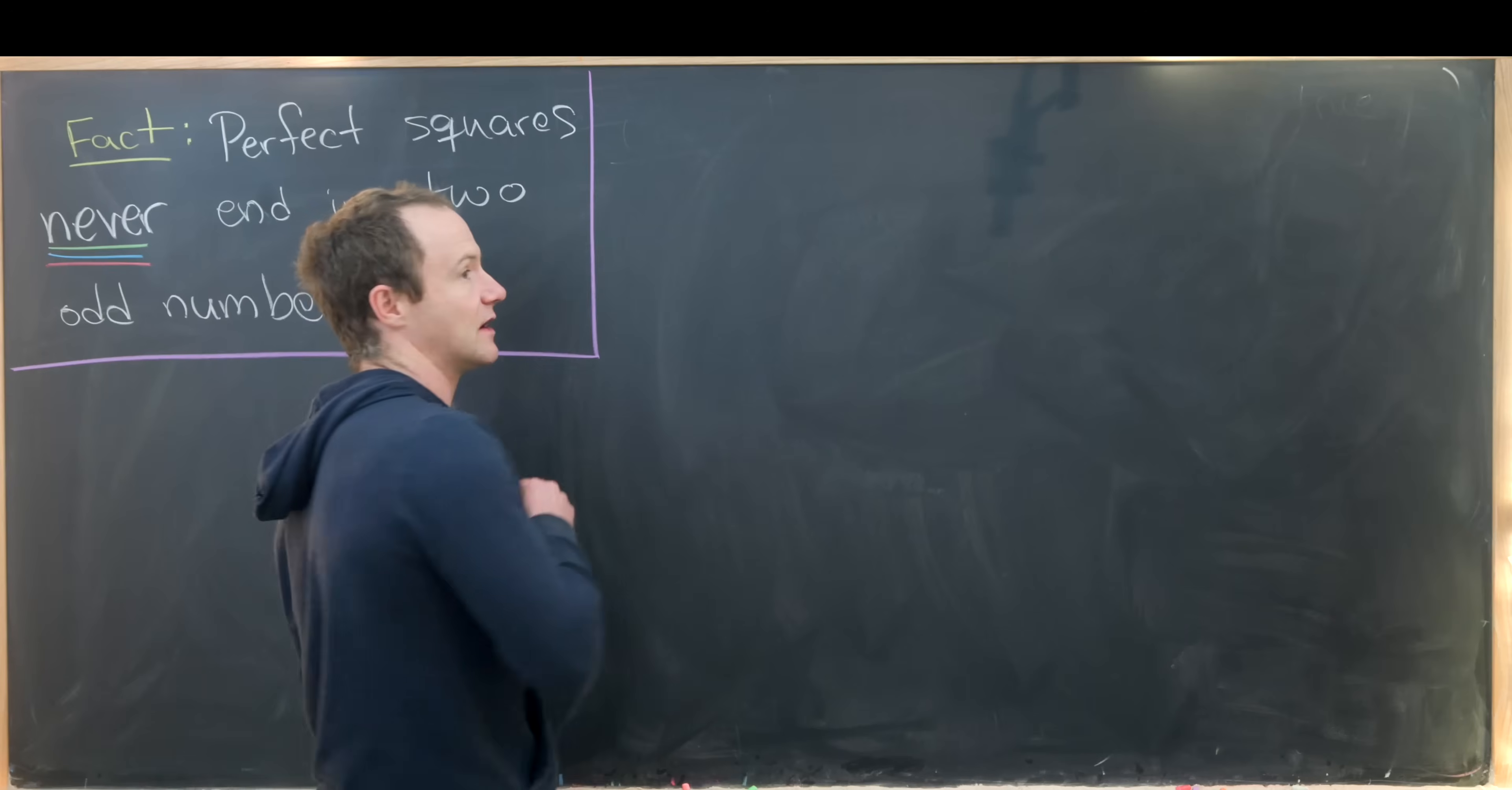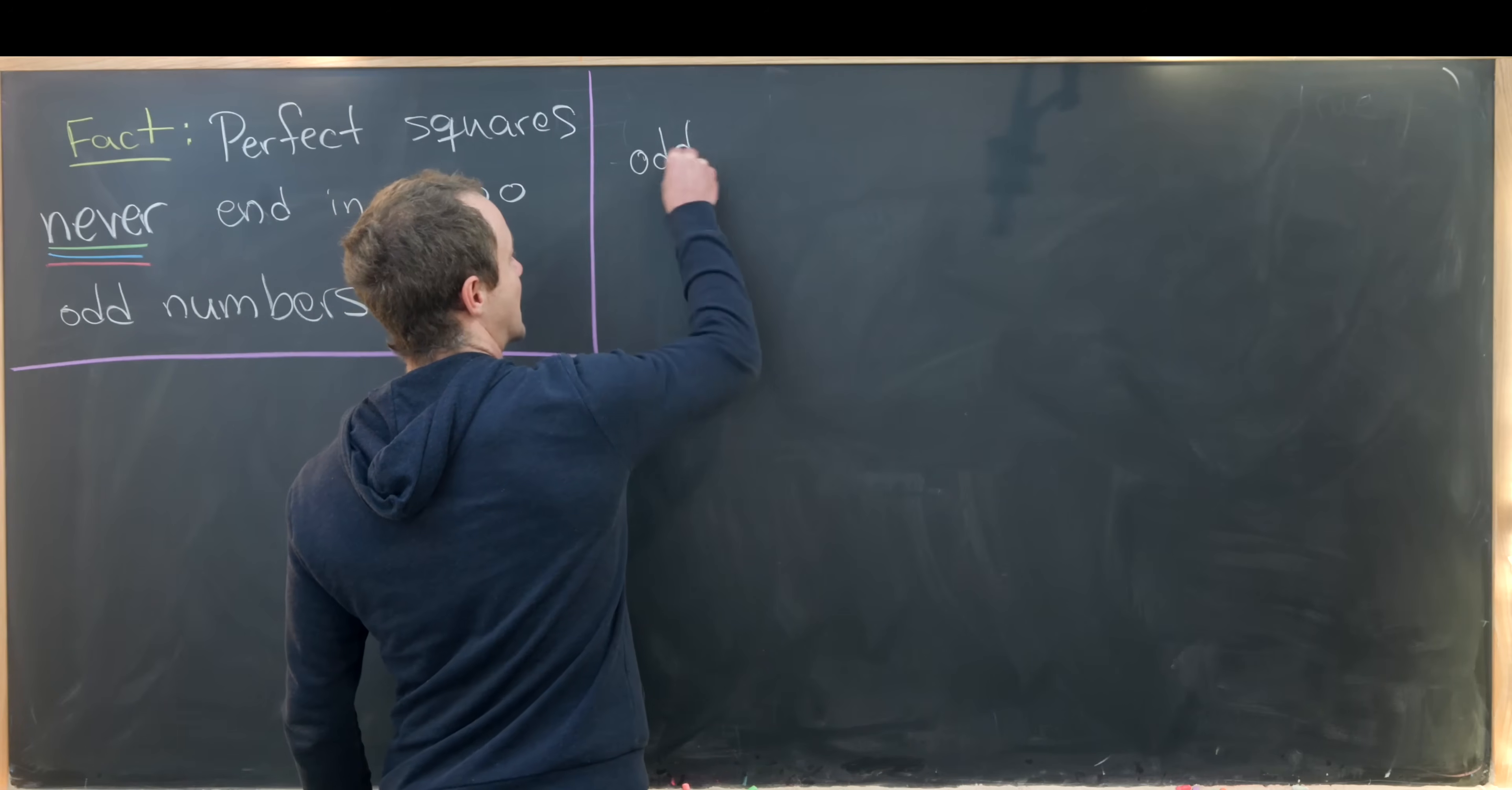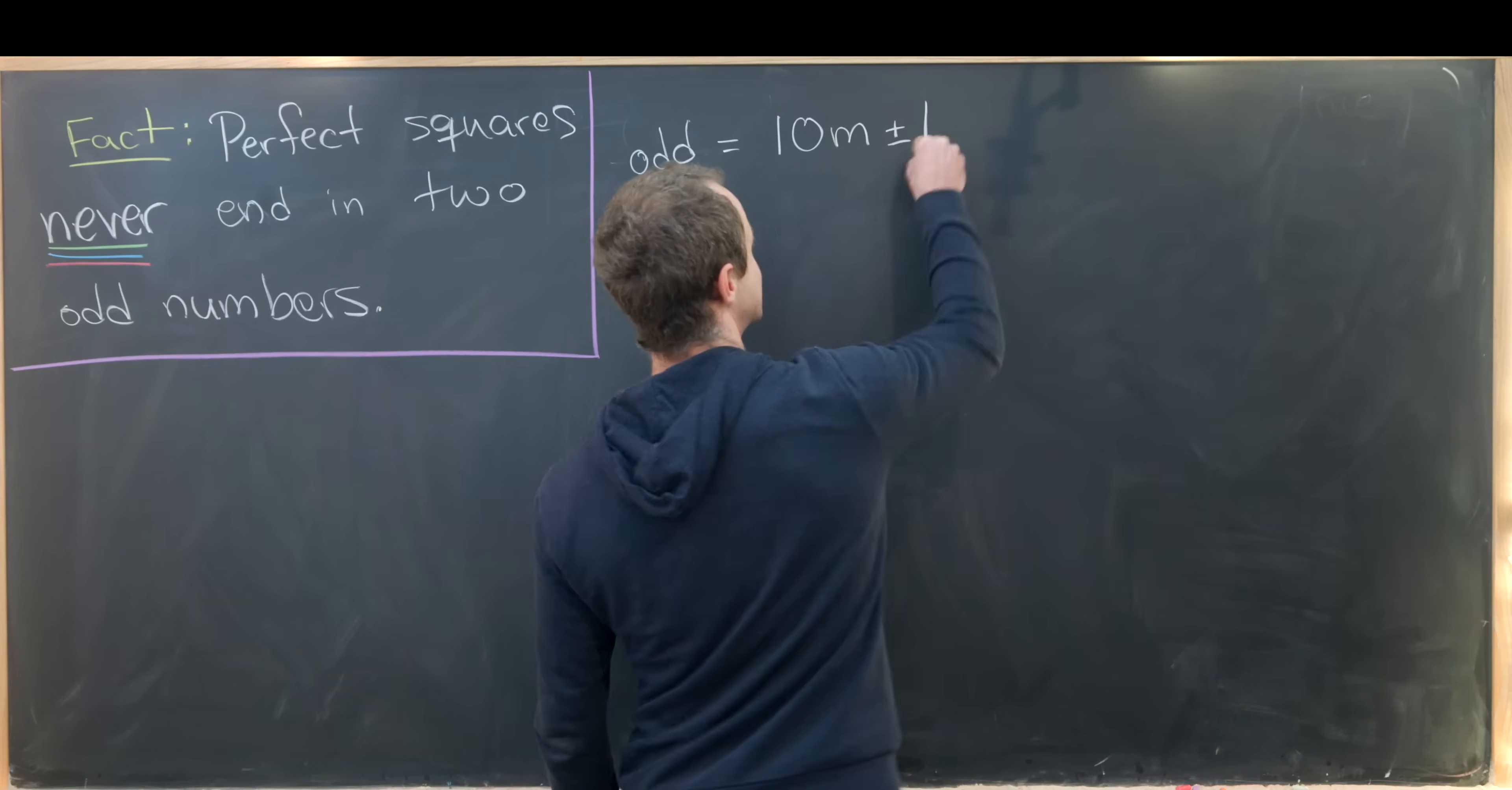So notice we only need to look at odd numbers by our first observation. And all odd numbers can be written in one of the following three forms.